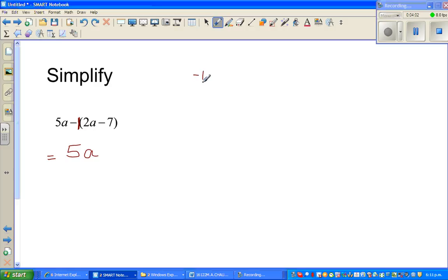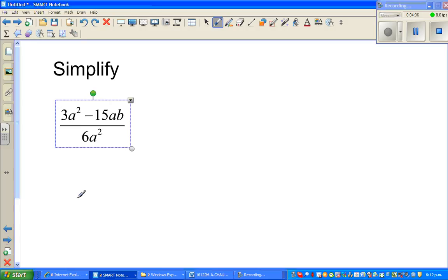Negative one times 2a is negative 2a, and you distribute this to also negative 7. So negative one times negative seven is plus seven. This will be 5a minus 2a plus 7. This is where most of you can go wrong if you're not careful. You can simplify this to 3a plus 7, and that's the answer. Pretty easy question.